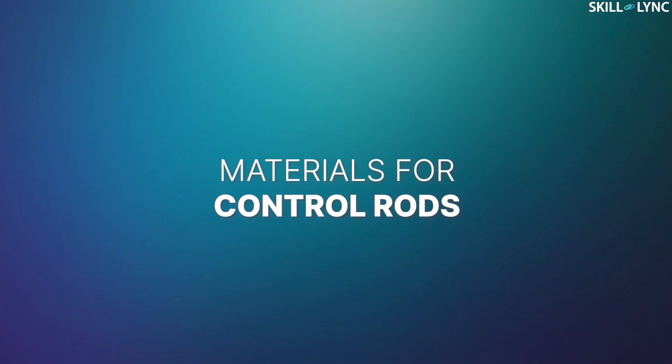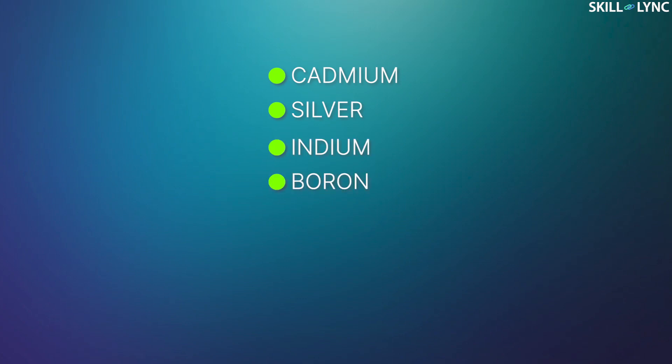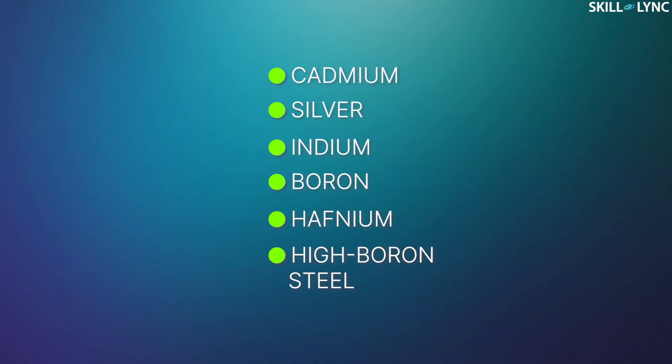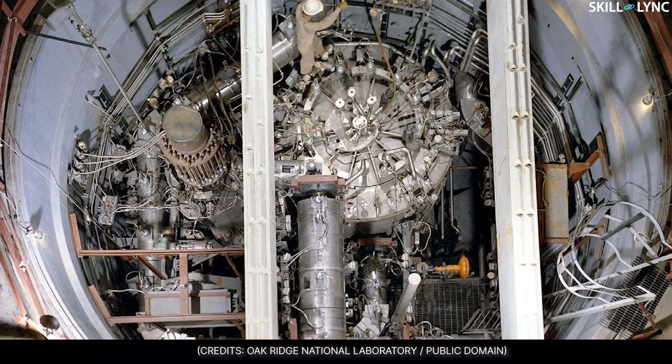Materials that can absorb neutrons effectively are preferred in making control rods. These materials can be elements like cadmium, silver, indium, boron, hafnium, or alloys like high boron steel, boron carbide, etc. We have seen the controlling of reactions.